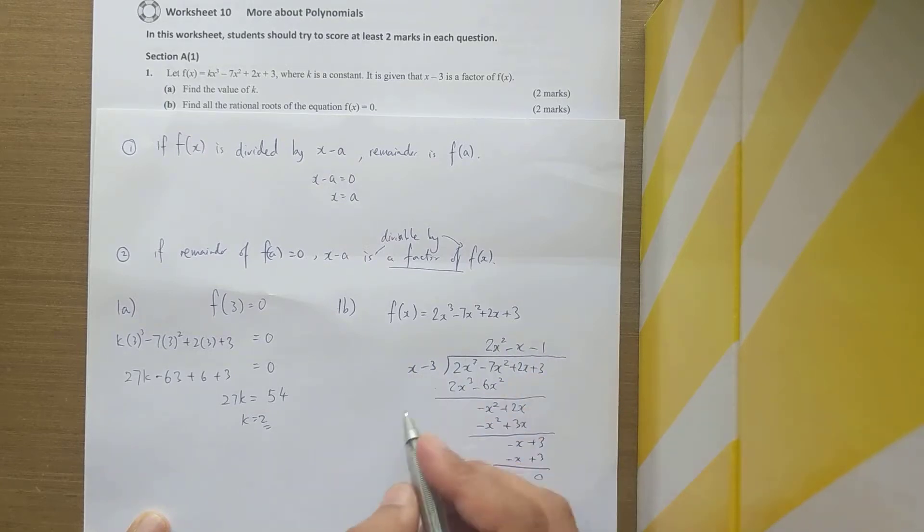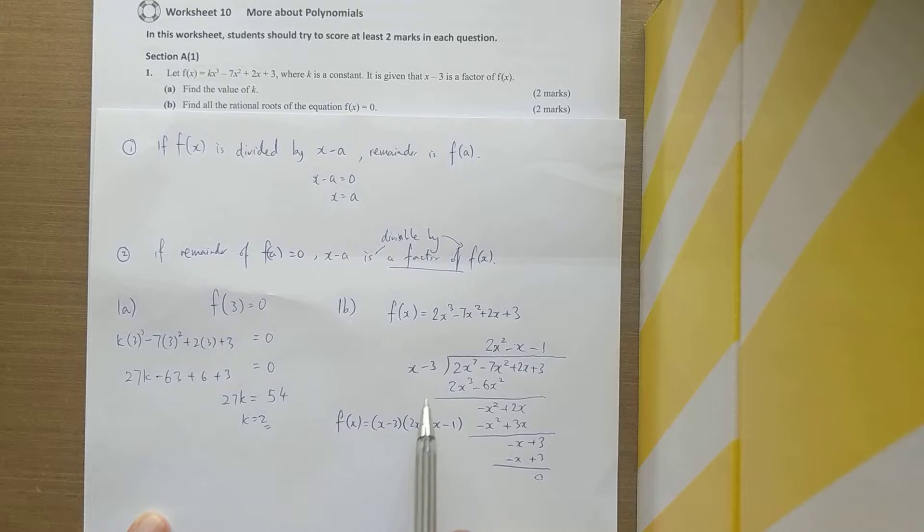Now we have your first factor and the second factor, so f(x) can be written down as x minus 3 times 2x squared minus x minus 1. We remember dividend is equal to divisor times quotient plus remainder. The remainder is 0, which is not needed in this case, so it's solely just the divisor times the quotient equals the original dividend.